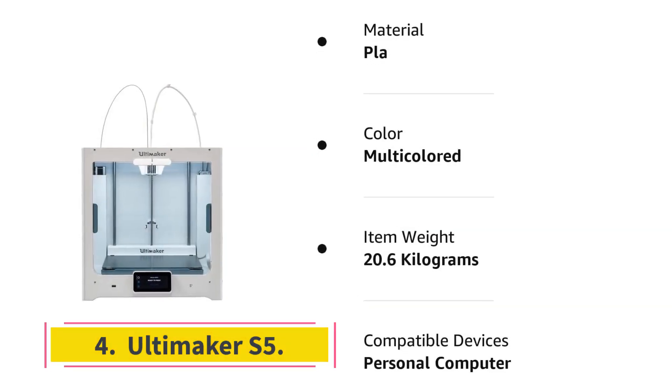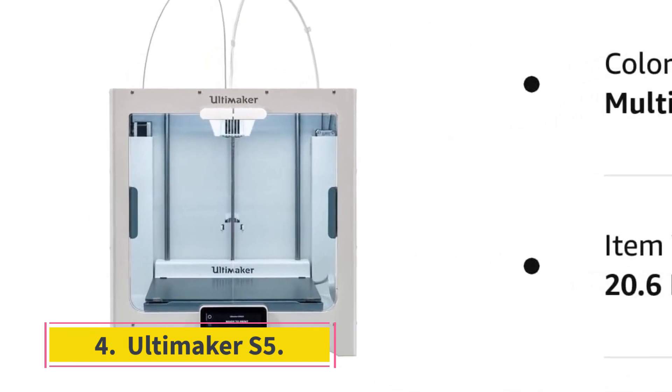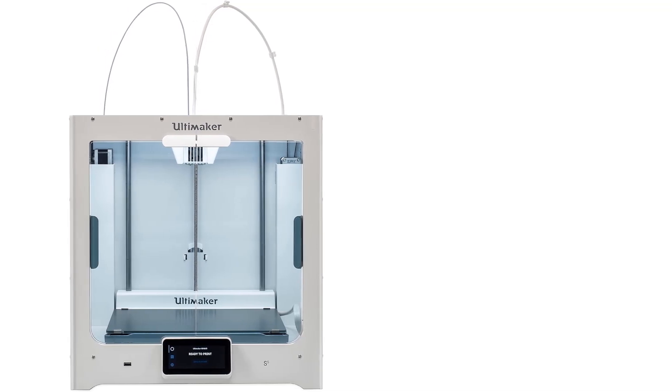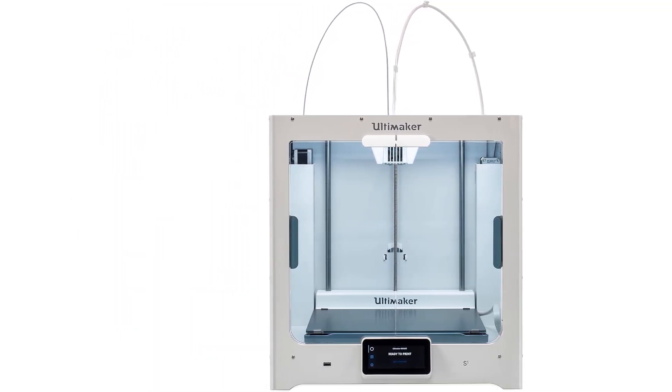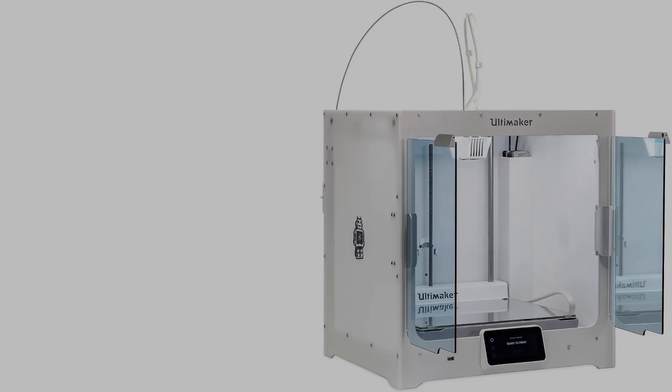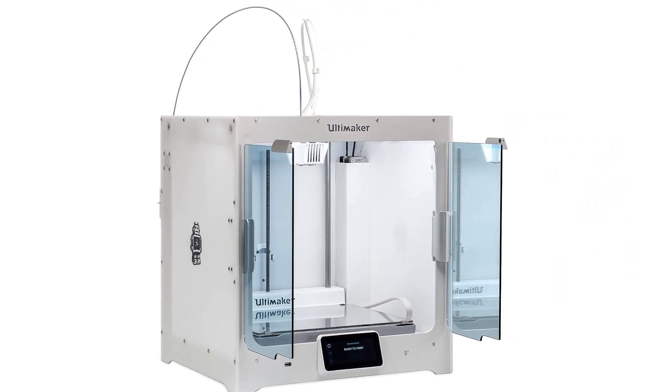Number 4: Ultimaker S5. The Ultimaker S5 costs a pretty penny, but you get a lot for its premium price. A 3D printer geared to professionals, the S5 has a large build area for a closed-frame printer and packs dual extruders, letting you print with two filament colors or types.